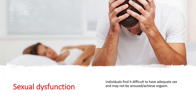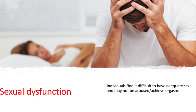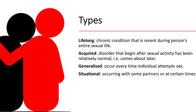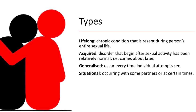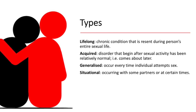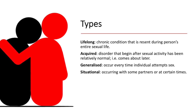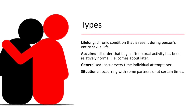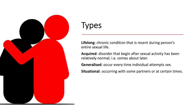Sexual dysfunctions are when individuals find it difficult to have adequate sex, and they may not be aroused or achieve orgasm. These can be organized into four categories depending on onset and frequency. Lifelong is a chronic condition present during a person's entire sexual life. Acquired begins after sexual activity that was relatively normal. Generalized occurs every time intercourse is attempted, while situational occurs with some partners or at certain times.